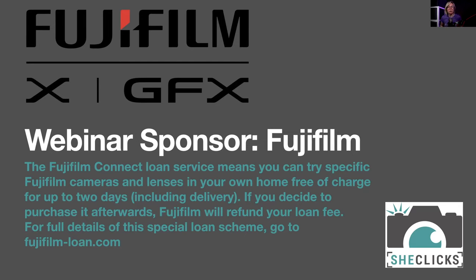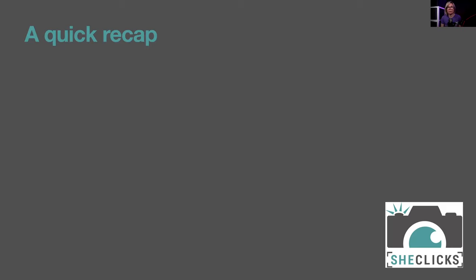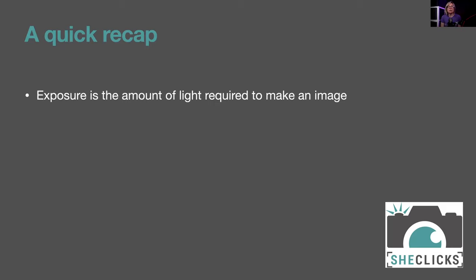Thank you very much to Fujifilm for sponsoring this webinar. Let's start with a quick recap — most of this webinar is going to feel like a recap because we've covered everything before; we're just pulling it all together and underlining the key points. Exposure is the amount of light required to make an image. Sometimes we think of it as brightness or darkness, but really we're talking about how much light is required to create an image we're happy with.